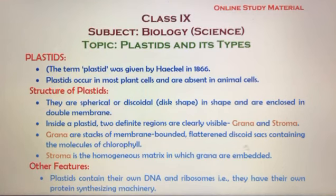These flattened discoid structures in the grana contain the molecule of chlorophyll. In chloroplasts, grana and stroma are the two main regions. Grana are like stacks — similar to stacking coins one on top of another.